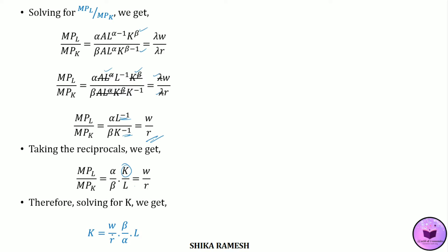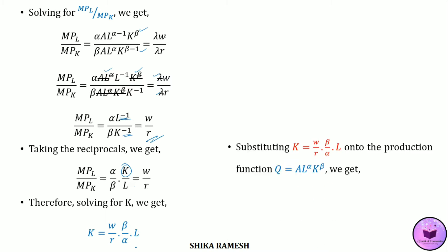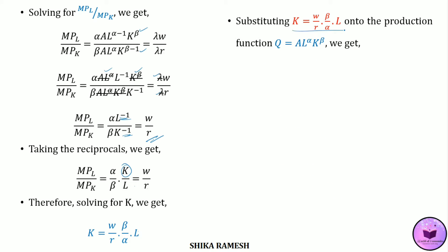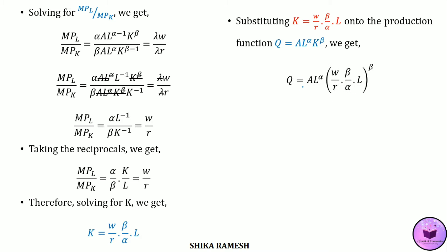From this equation, solving for K we get: K = (w/r)·(β/α)·L. Now substituting this equation for capital into the production function q = A·L^α·K^β, we get q = A·L^α·[(w/r)·(β/α)·L]^β — that is, the entire expression for K is substituted in, and since K appears raised to the power β in the production function, the entire substituted expression is raised to the power β.